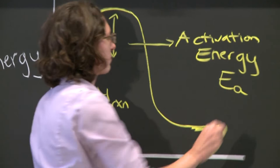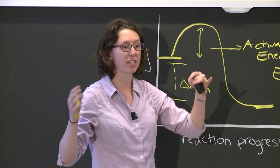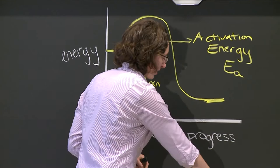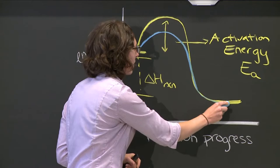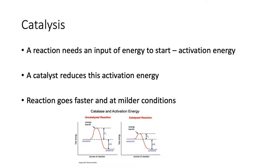This activation energy is what we care about when talking about reaction kinetics. A catalyst makes the reaction faster by lowering this energy barrier. With a catalyst, the activation energy is smaller — the products and reactants have the same total energy, but the energy needed to get the reaction going is less. So the reaction can go faster and at milder conditions.